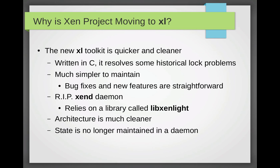The new XL toolkit is quicker and cleaner — it's written in C. It gets rid of the historic locking problems that we had with XM, and it's a lot simpler to maintain and to expand and to add new features. The whole Xend daemon concept is gone, and in its place we are now relying on a library called LibXenLite. As a result, the whole architecture is much, much cleaner, and there is no need for a daemon to maintain state — that's dealt with at the library level.